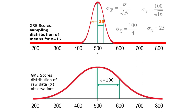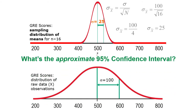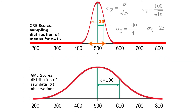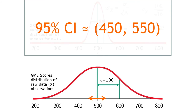Here's another situation: sample size of 16, which gives us a standard error of 25. The approximate 95% confidence interval is going to be smaller, because the standard deviation is smaller and there's more area contained within a smaller space. Two standard deviations down will be 50 points down from 500, and two standard deviations up will be 50 points up from 500. So we report our sample mean was 500, and our 95% confidence interval was approximately 450 to 550 — half the size of the previous one.